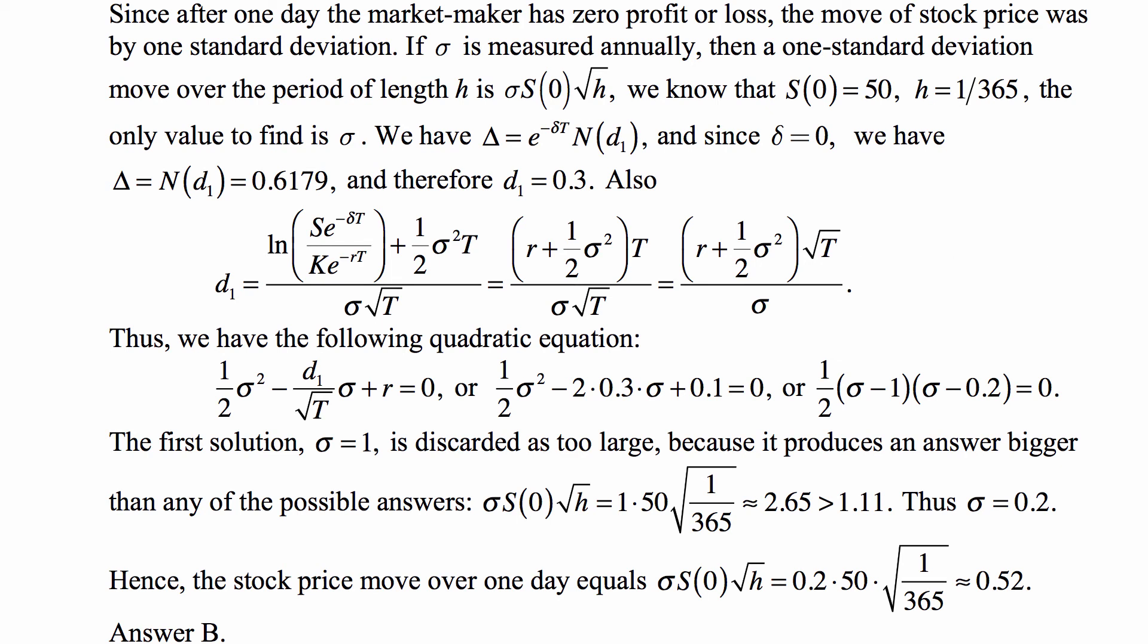Maybe just a point of clarification. That quadratic equation that you see there, you have a square root of t there. t is the time until expiration of the option, which is a quarter of a year. And the square root of that is 1/2, so 1 over 1/2 is 2. That's where the 2 comes from. And of course, 0.3 is what we just calculated as d1 to make it hopefully clear. But anyway, the answer is B, as you can see.